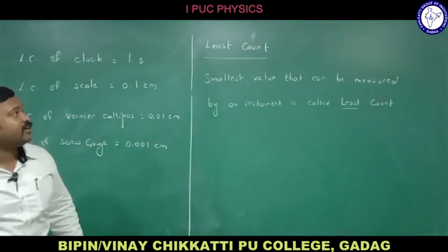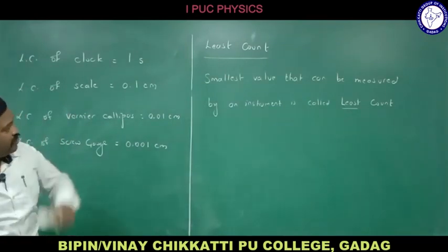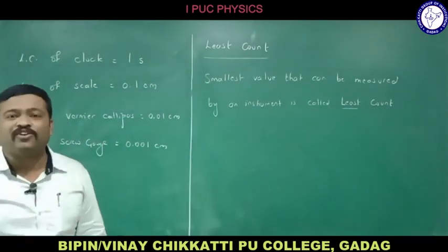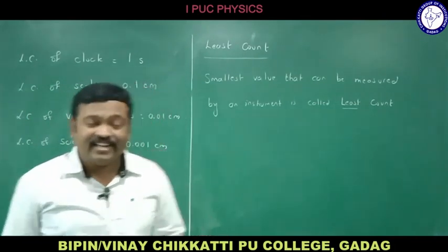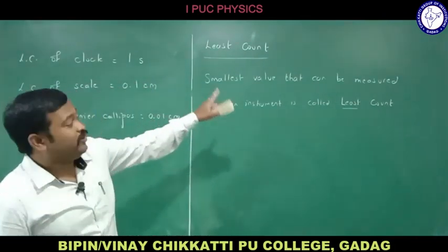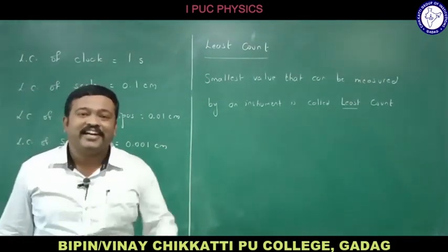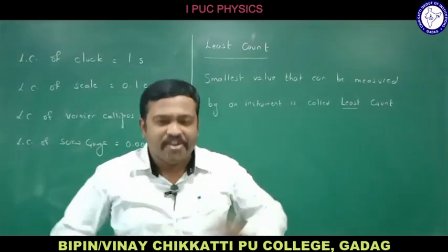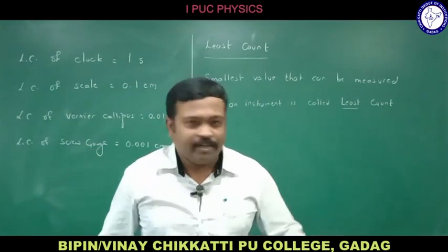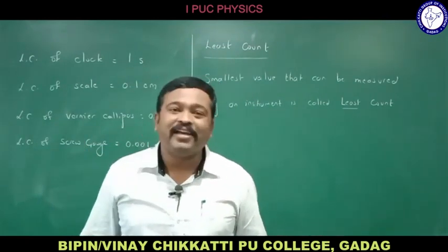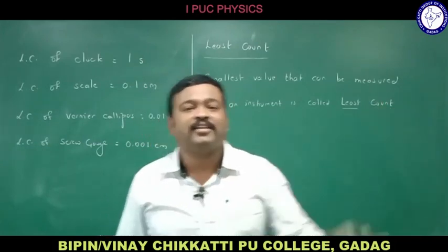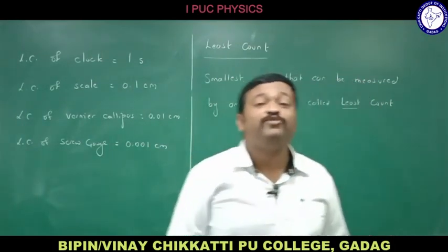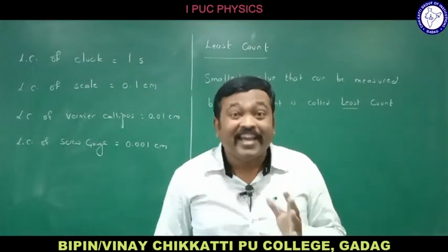The smallest value that can be measured by an instrument is called its least count, and the error which occurs in the least count is called least count error. Every instrument has its least count, and we have seen the least counts of the scale, vernier calipers, screw gauge, and clock. This was all about errors and types of errors.